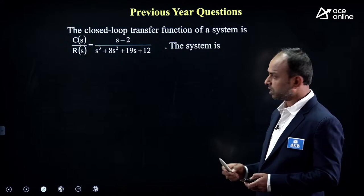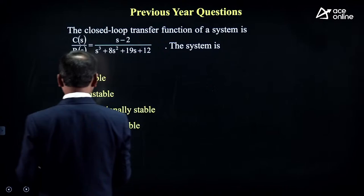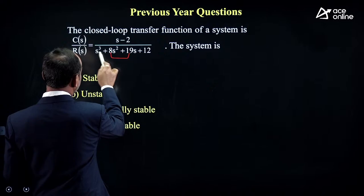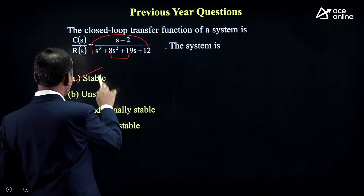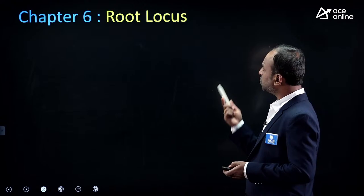Another question: examiner gives a closed loop transfer function and asks if the system is stable. Using the internal-product technique — 18×19 > 1×12 — we can verify stability without pen and paper. The answer is stable.